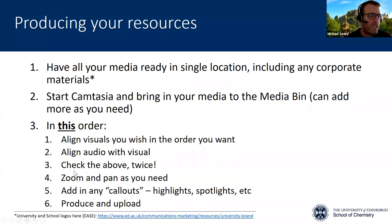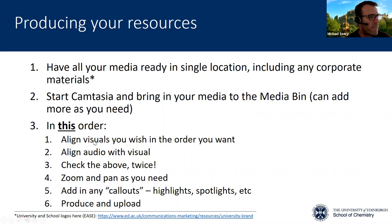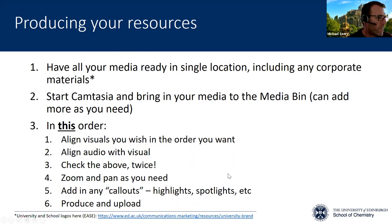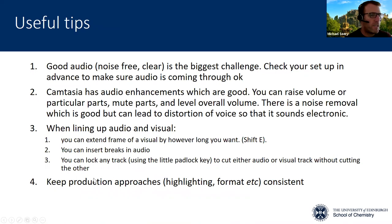After you have the visual and audio set, you should do any zooming and panning. The reason you must get the audio and visual set up first is that if you subsequently cut a bit of audio or visual, that will distort the zoom and pan and put it out of sequence. Then once you've got that sorted, you can add in any callouts — highlights, spotlights, or whatever — for that signalling principle. Then run it through again, make sure you're happy, and press Produce to produce an MP4 file and upload it to MediaHopper. The first and most difficult tip is good audio.